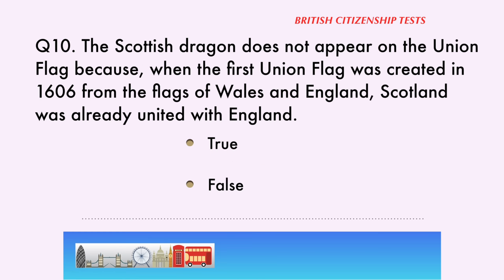Question 10. The Scottish Dragon does not appear on the Union flag because, when the first Union flag was created in 1606 from the flags of Wales and England, Scotland was already united with England. True or False? The correct answer is: False. The flag with the dragon is the Welsh flag, not the Scottish flag.